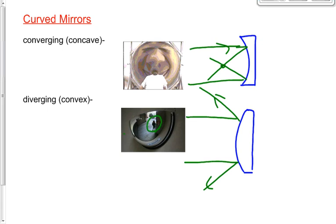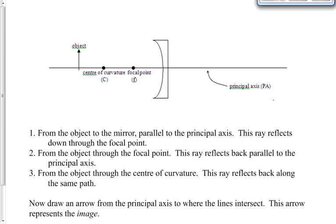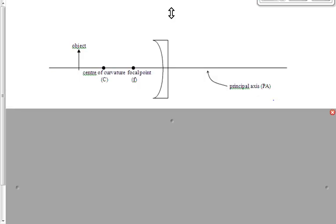Today we're going to draw ray diagrams for both types of mirrors across five different scenarios or zones each. We previously did a ray diagram for a plain flat mirror — the one you see in your bathroom every morning. The characteristics of that image are always right side up, always the same size, and always virtual. Today we'll find all kinds of different possible outcomes depending on the mirror type and where the object is positioned.